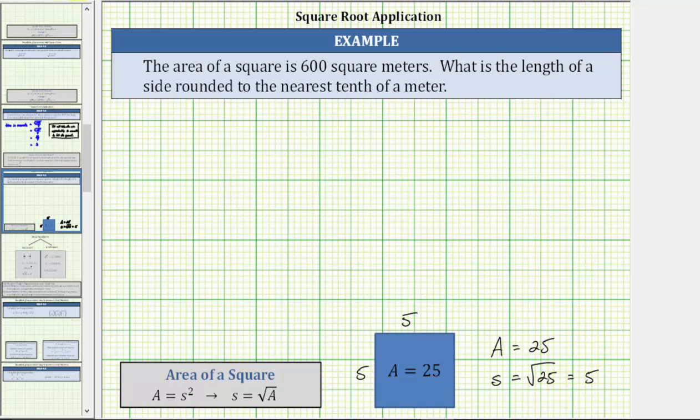So going back to our example, we are given the area A equals 600 square meters, which means the side length S must equal the square root of 600.